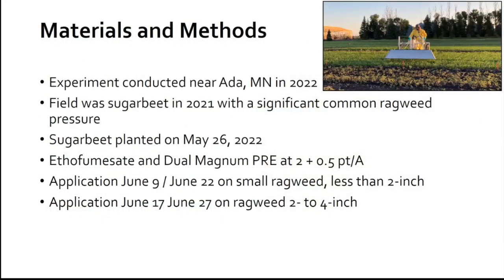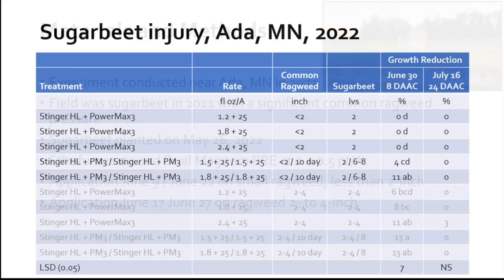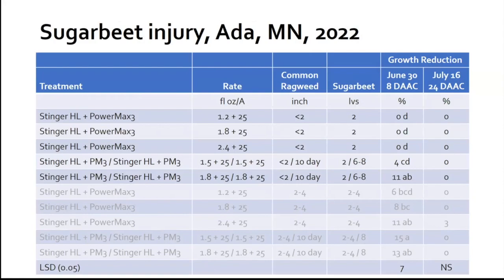We conducted this experiment in Ada, Minnesota in 2022. The field was previously sugar beets in the 2021 growing season. Sugar beet was planted May 26. Ethofumesate and dual magnum were applied pre at two pints and a half pint to the acre. Applications were made June 9th and June 22nd on small ragweed less than two inches, and another application on June 17th and June 27th on ragweed two to four inches. In the upper half of this table, we see growth reduction induced by the application made to common ragweed two inches or less — we noted growth reduction with the repeat applications at the 1.5 and 1.8 fluid ounces per acre rate.